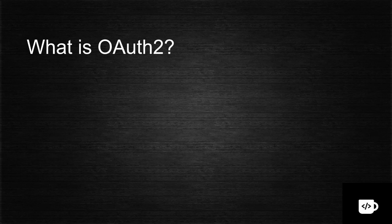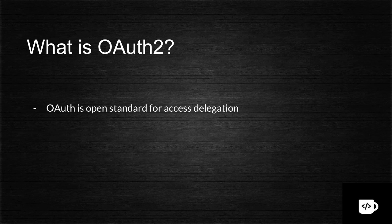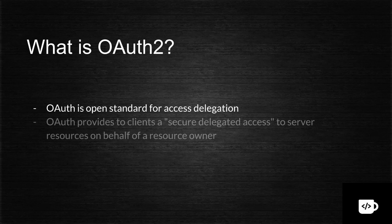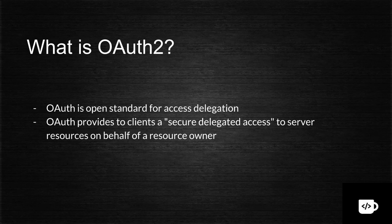So what is OAuth 2? OAuth is basically an open standard for access delegation. It is not for authentication only — it is for access delegation. You delegate your authority to somebody else. That is what OAuth does in general. It is not an authentication protocol; it is an authorization standard. OAuth also provides secure delegated access.